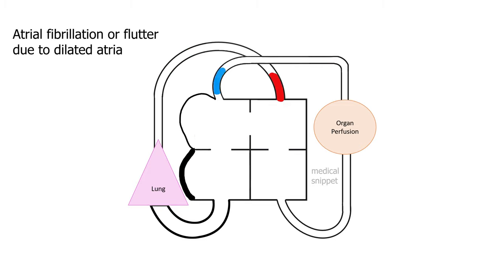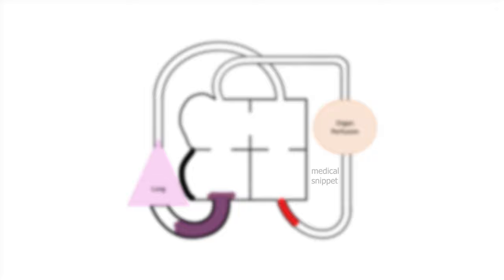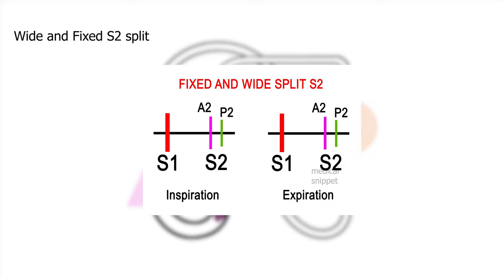Atrial fibrillation or flutter can occur due to the dilated right atrium. The most important auscultatory finding in atrial septal defect is wide and fixed split-second heart sound.